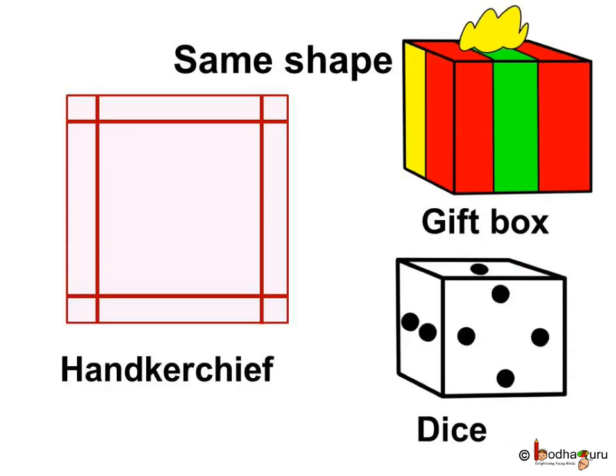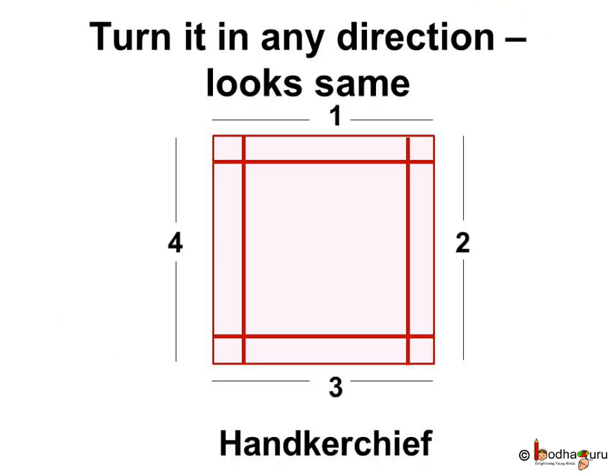This is your handkerchief and this is a gift box and this is dice that we use for playing board games. They are different in size but they all have same shape. Just take the handkerchief. Now turn it in any direction. Every time it looks the same.